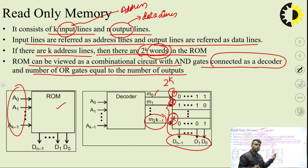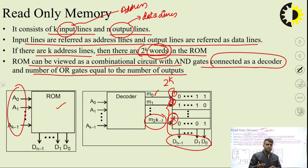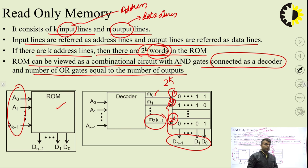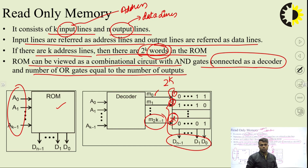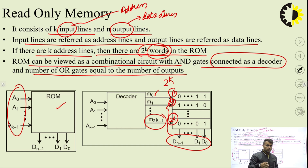Inside the ROM, there are OR gates which are flexible — I can choose any number of OR gates with any number of inputs. If I need three products to be summed, I enable three inputs of the OR gate. If I need two, I enable two and leave the third open. By controlling which connections are enabled or open, we make the OR part flexible and programmable.